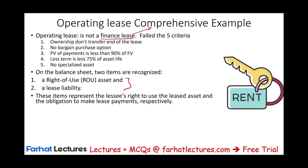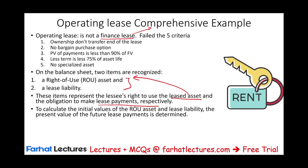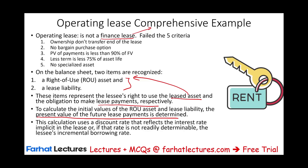These items represent the lessee's right to use the leased asset and the obligation to make the lease payments. We have an asset under our control — the right to use it — and a liability called the lease liability. To compute the initial value of this entry, the present value of the future lease payments is determined. We use the interest rate implicit in the lease if known; if not, we use our incremental borrowing rate.